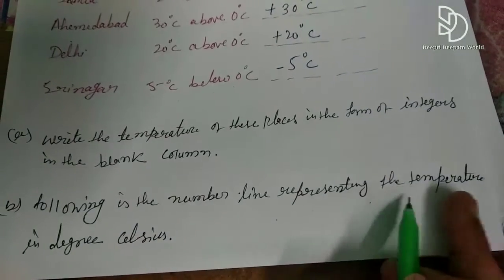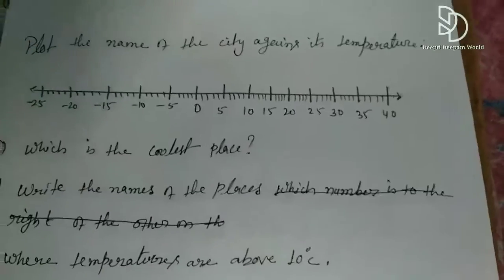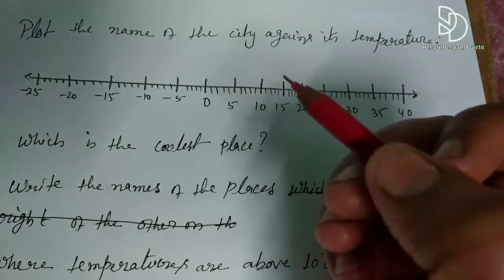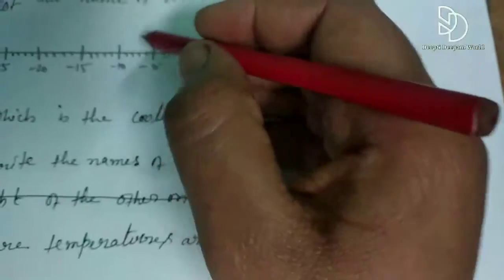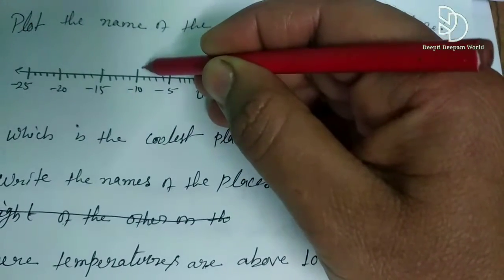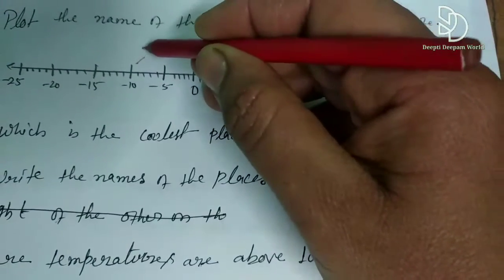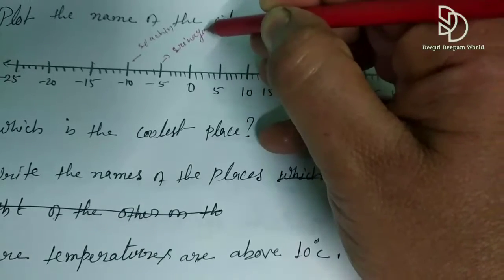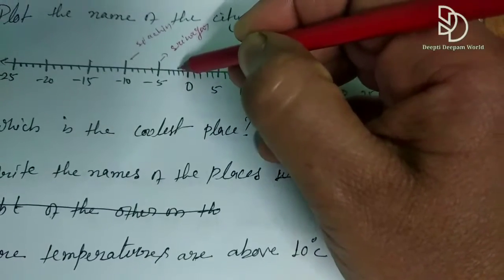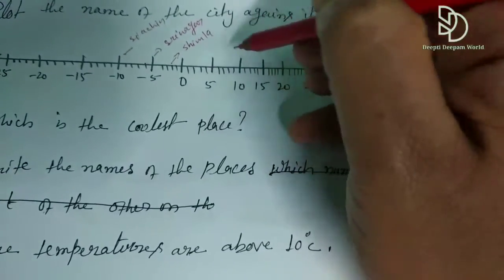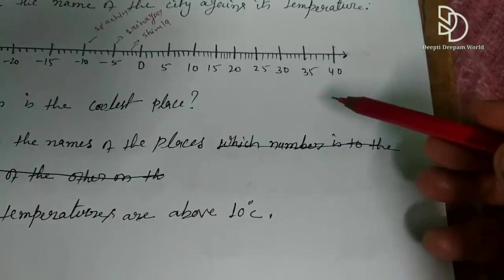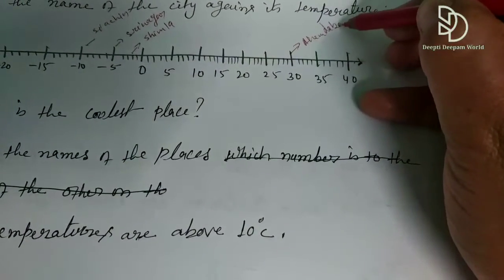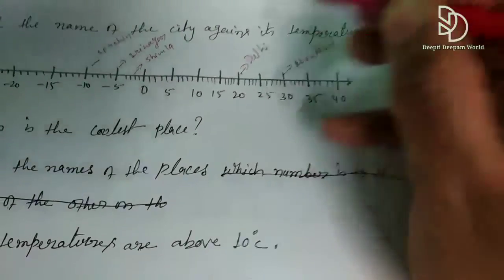The following is the number line representing the temperature in degrees Celsius. We have been given the number line and we have to show all the temperatures on it. We plot minus 10, minus 5, minus 2, then plus 30 degrees for Ahmedabad, and plus 20 degrees for Delhi on the number line.